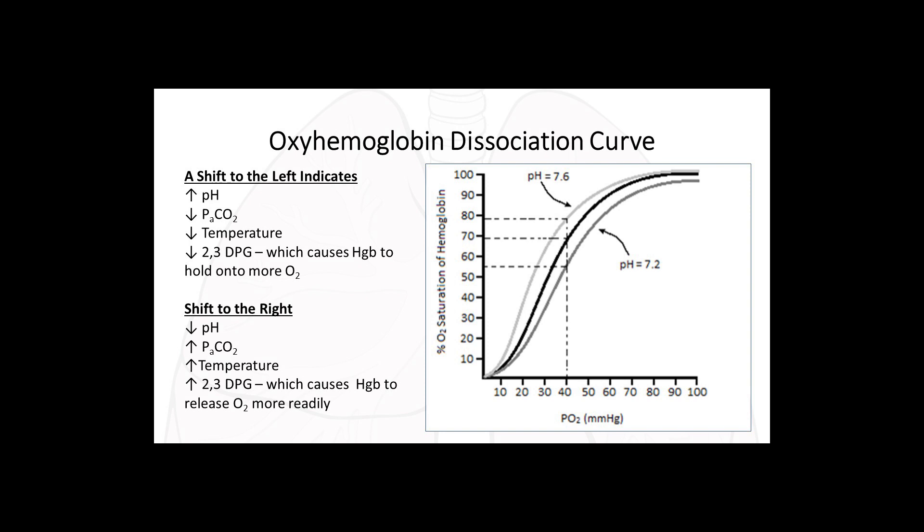A shift to the right indicates a lower pH — for example, metabolic acidosis or respiratory acidosis. In respiratory acidosis, your PaCO2 is elevated. If you are in a hyperthermic state with increased temperature, your pH will often be acidic. When there is a shift to the right on this curve, hemoglobin releases oxygen more readily. This is not a graph you look at on a bedside monitor — it is an association to what happens when your body becomes more acidic or less acidic, or hyperthermic versus hypothermic.